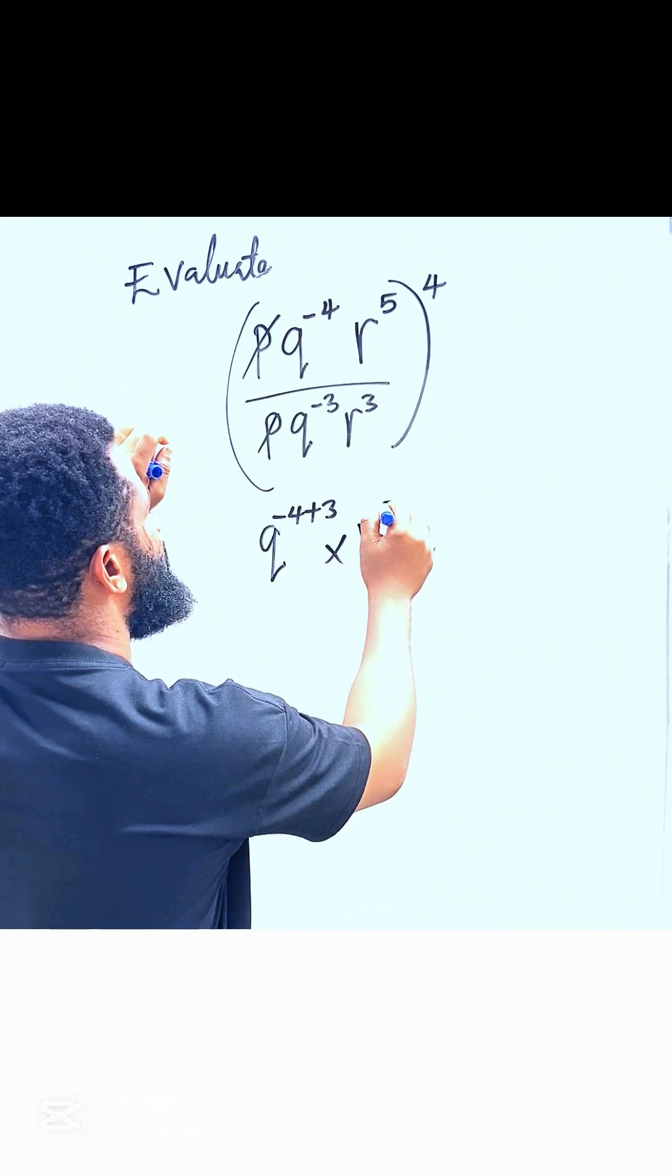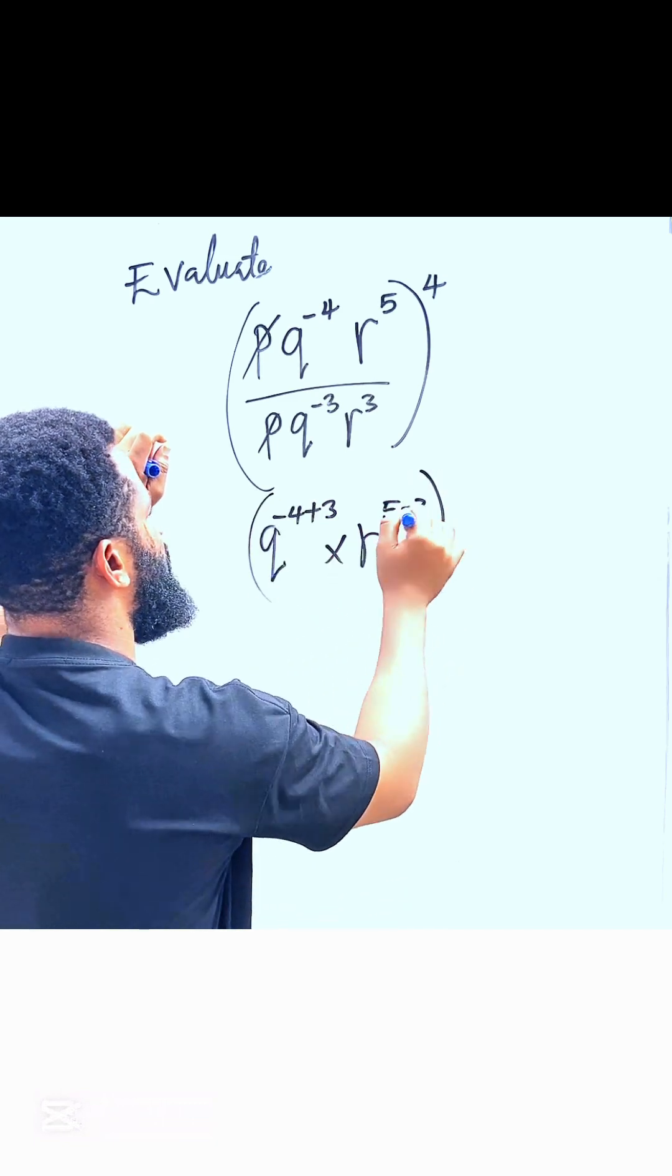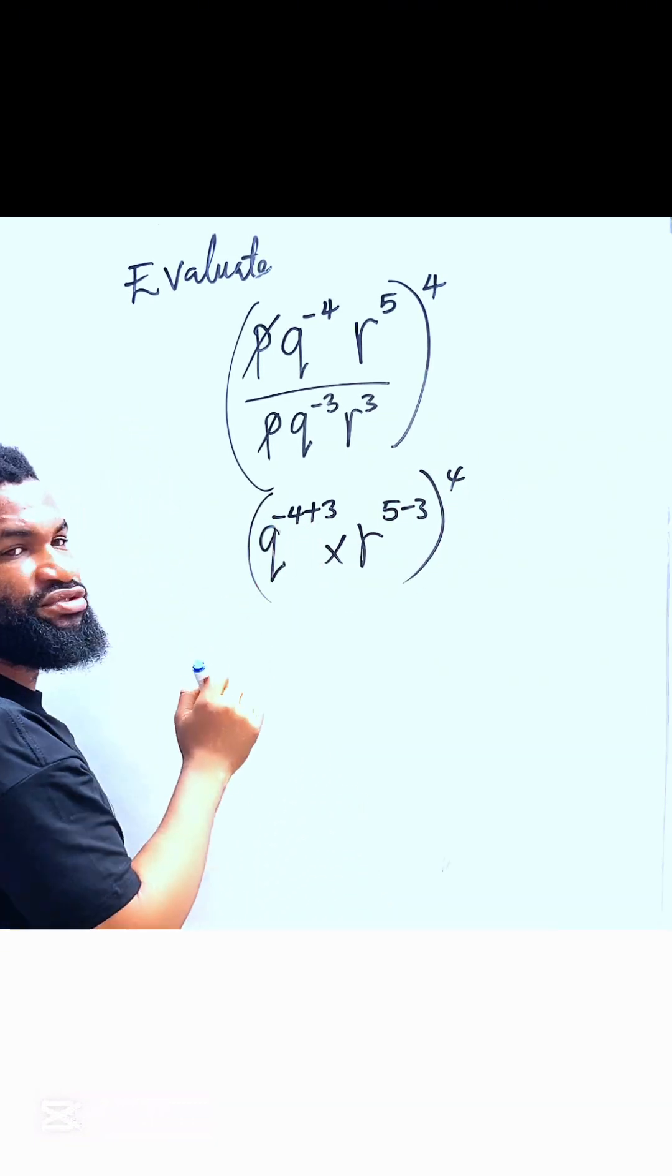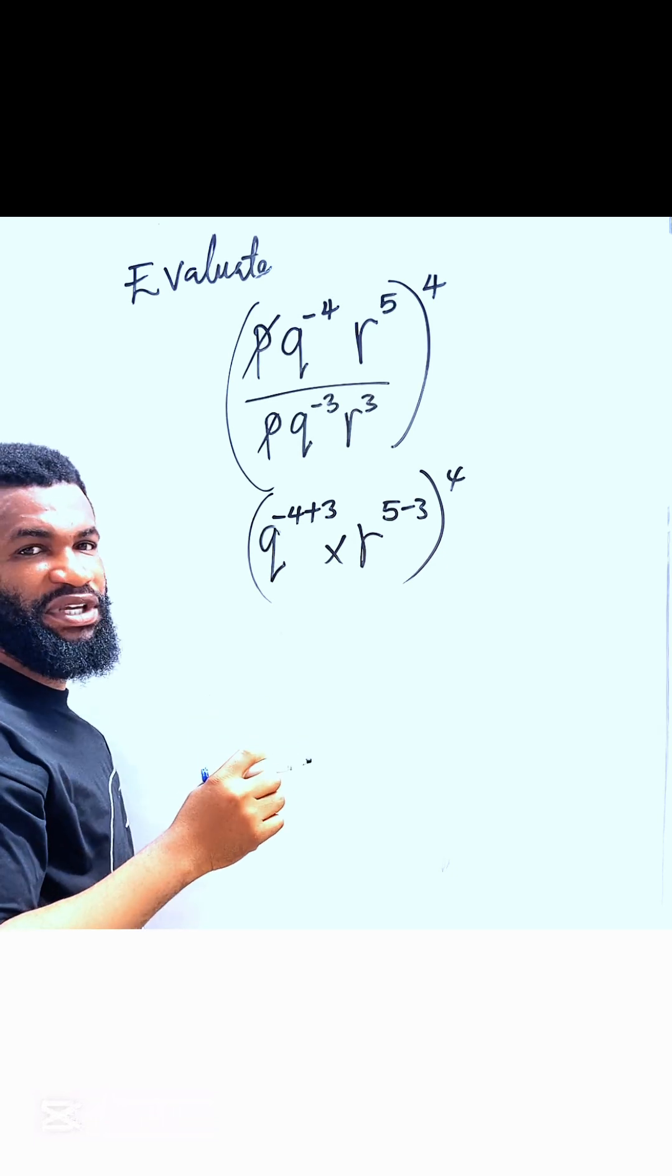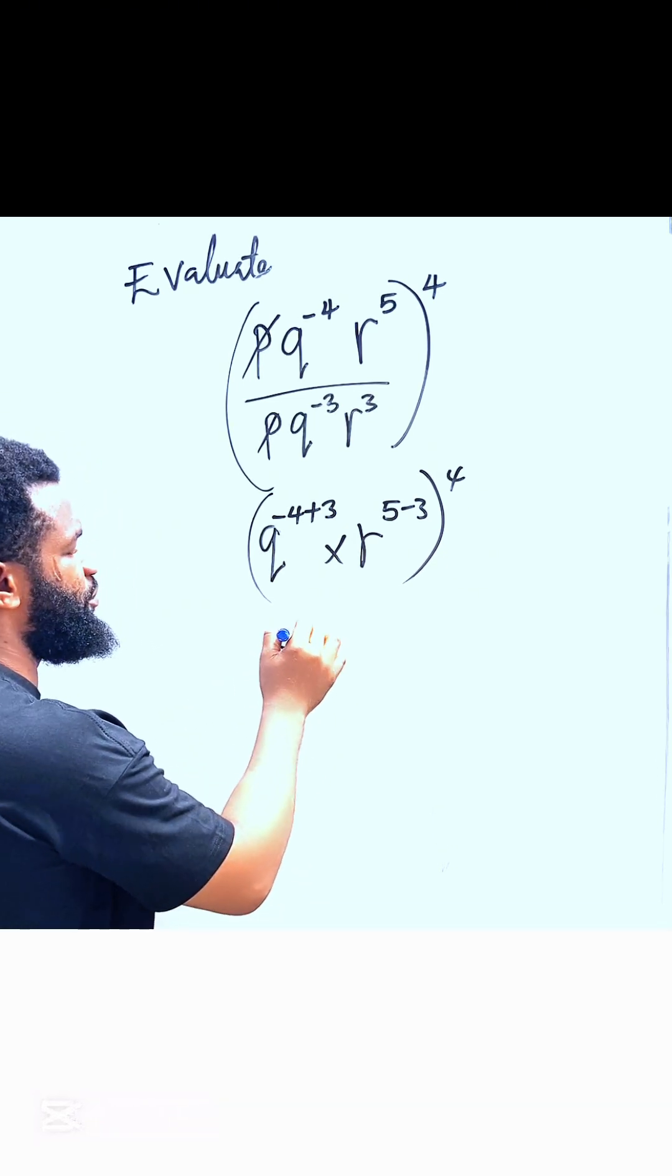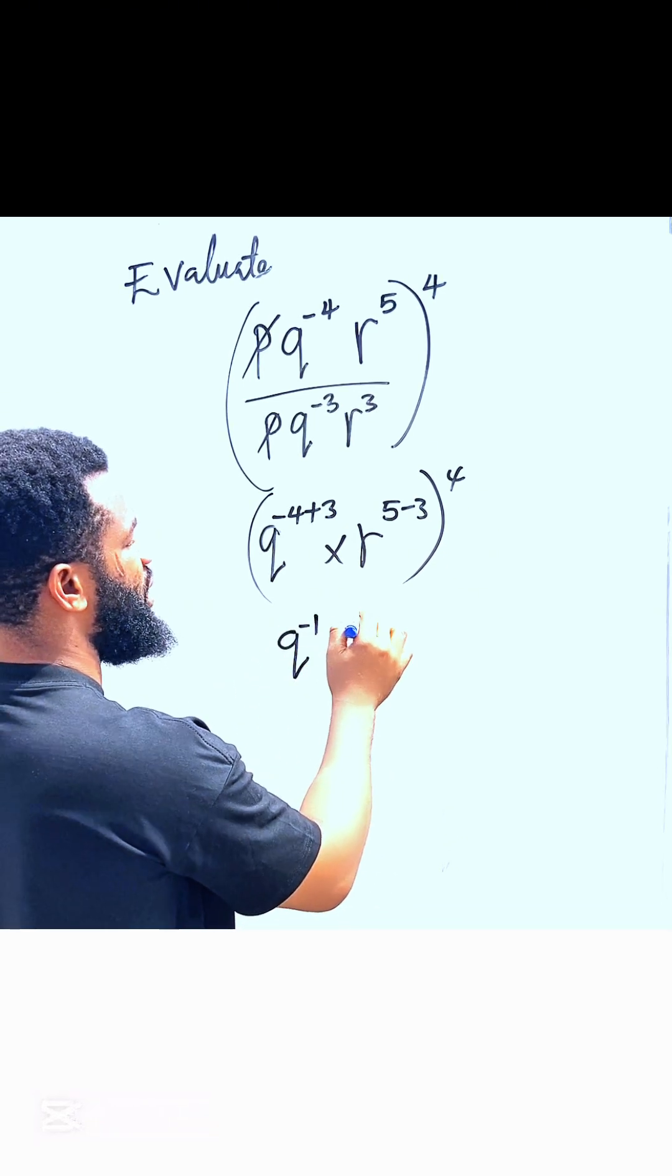So this is going to be minus 4 plus 3 is going to be minus 1. So this is q raised to minus 1 and r raised to 2.